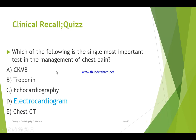Which of the following is the single most important test in the management of chest pain? A: CKMB. B: Troponin. C: Echocardiography. D: Electrocardiogram. E: Chest CT. For any patient with chest pain, the single most important test is electrocardiogram. And after electrocardiogram, you can do cardiac biomarkers, preferably troponin.